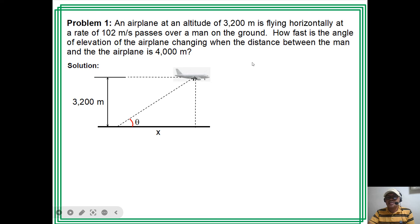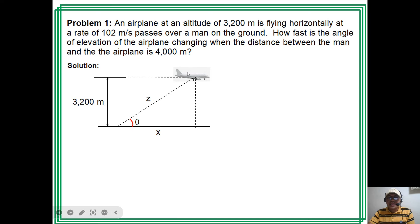We represent this horizontal distance by x. We also have the distance of the man to the airplane, which is also variable — we represent this by letter z. The rate given is 102 meters per second, which is the rate at which the airplane is flying. In the figure, that is the rate at which the distance x is changing, so dx/dt = 102 meters per second.